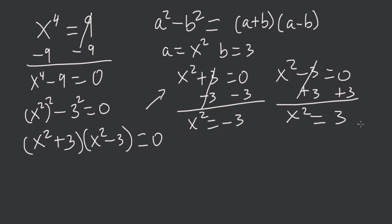Now we take the square root of both sides of each. And we have x is equal to plus and minus square root of negative 3. Here is x is equal to plus minus square root of 3.